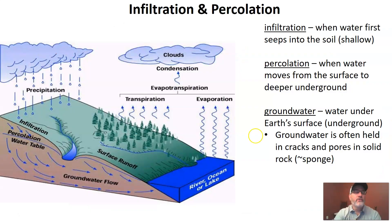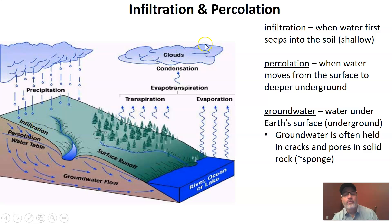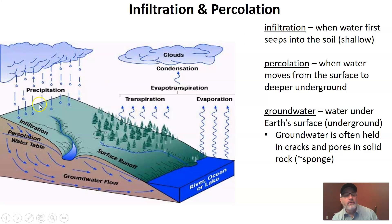When precipitation hits the ground, we've got two basic things that can happen to it. The first thing is that precipitation could be infiltrated — it could pass into the soil. Water first seeps into the soil. You've undoubtedly been outside after a rainstorm and you know that the soil can get very waterlogged, very soaked. That's a good example of infiltration. Infiltration is shallow — right at the surface — and this is where precipitation is absorbed.